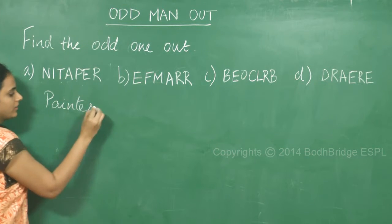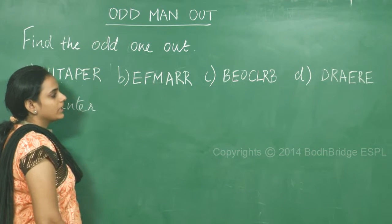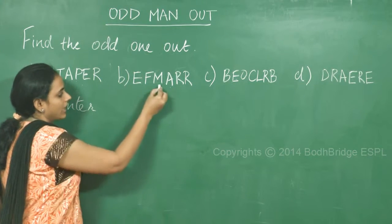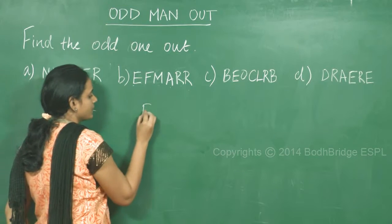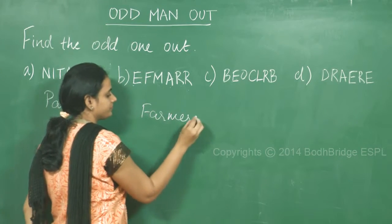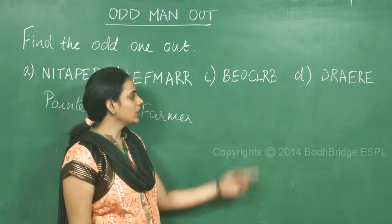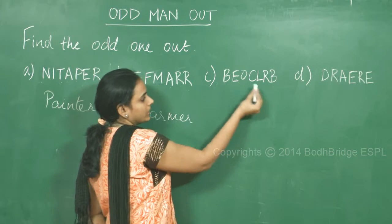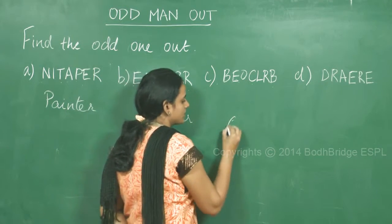So if we jumble the letters, we get painter for the first option. The second one, option b, we get f a r m e r, which is farmer. So option b is farmer. Similarly, if we jumble option c, we get c o b b l e r, which is cobbler. So option c is cobbler.